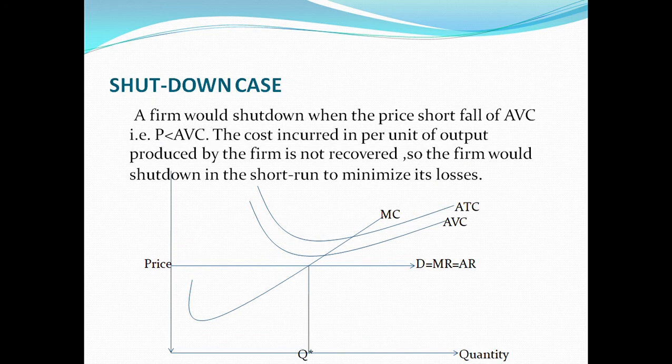The last but not least case is the shutdown case. A firm will shut down when it cannot recover both the average total cost or its average variable costs.